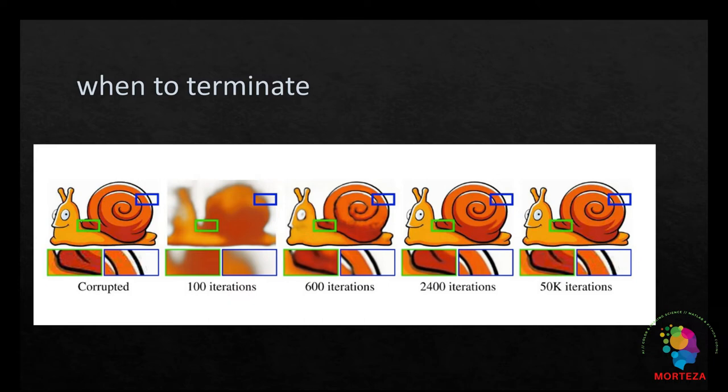This figure shows the impact of the number of optimization iterations on the generated image prior X star. It shows how a nice-looking local optimum is reached after 2,500 iterations before the network overfits the corrupted image.